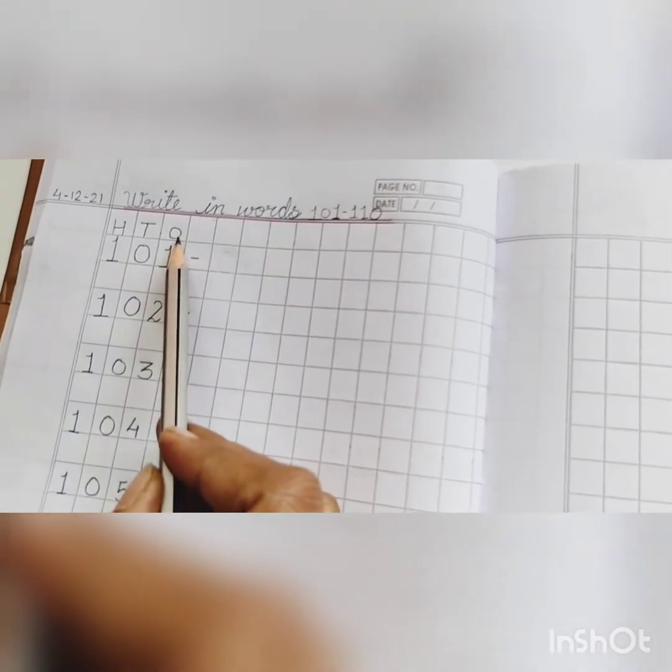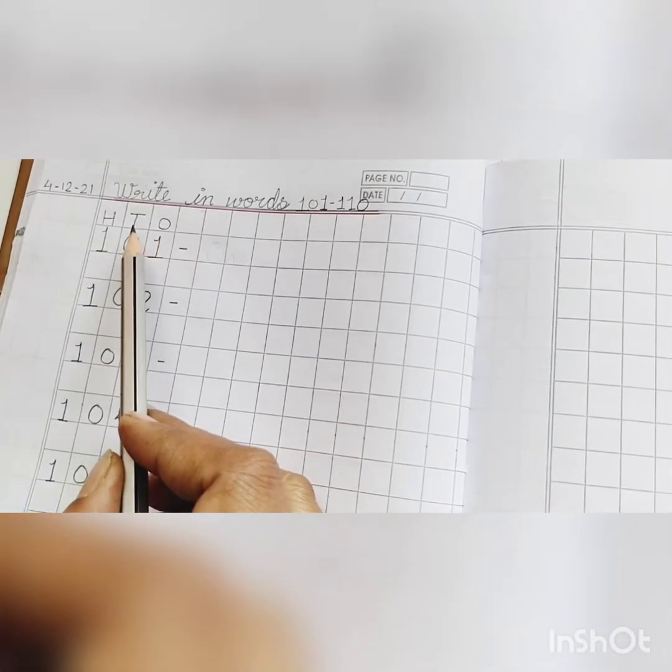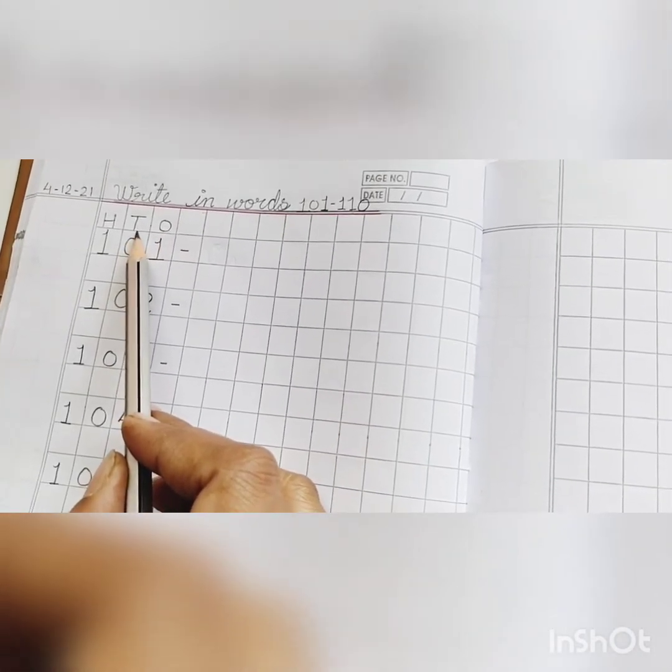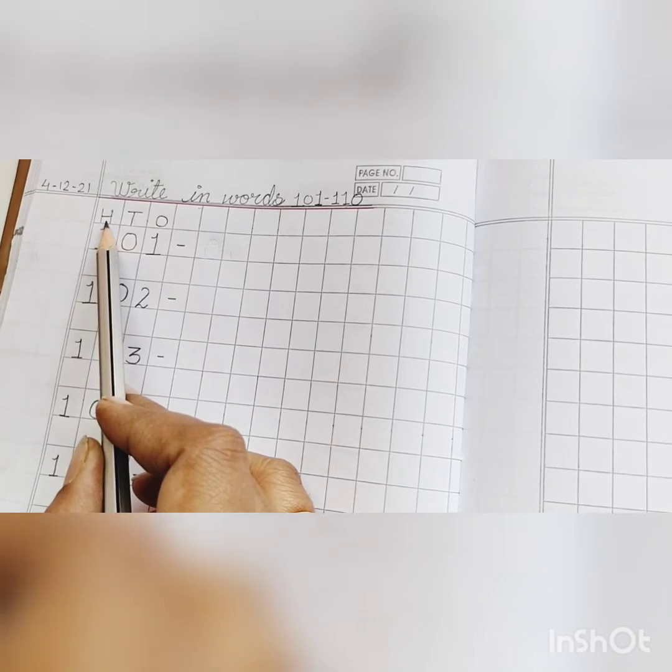We will write O for ones, T for tens and H for hundreds.